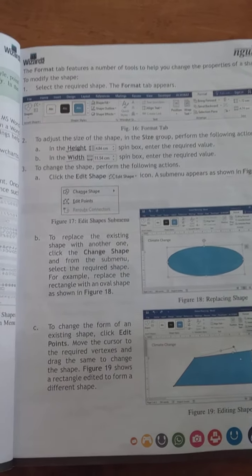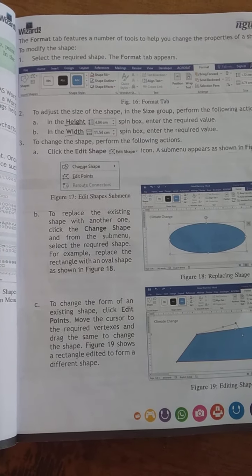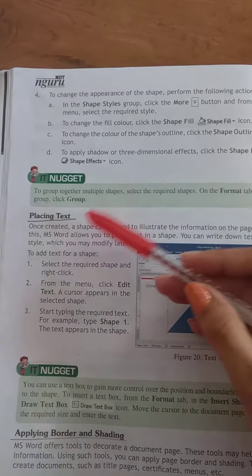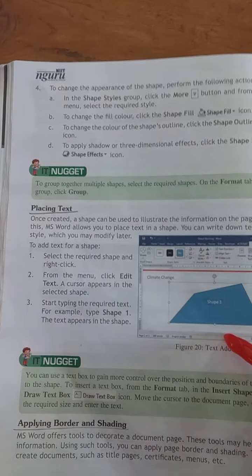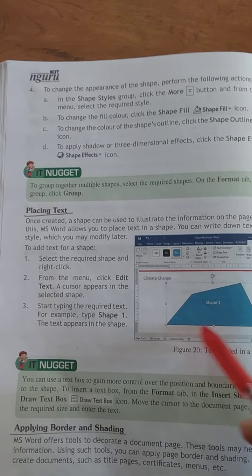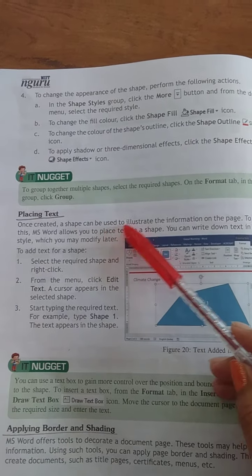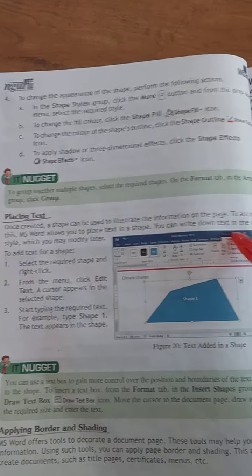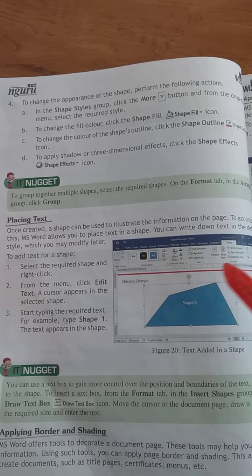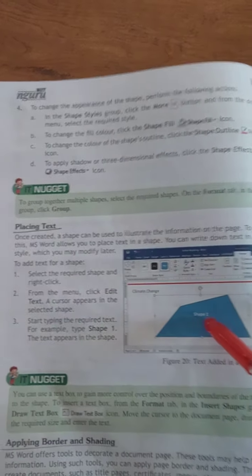Whatever shape you want to replace it with. It's clear how to replace and how to add a shape. Next topic is placing text. Whenever you create a shape, you need to write text inside it. Once created, a shape can be used to illustrate information on the page — for example, writing the label 'rectangle' inside the shape.